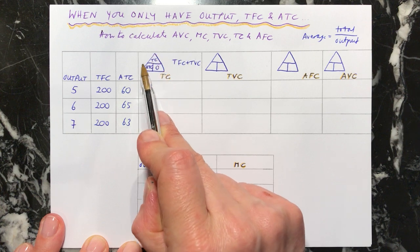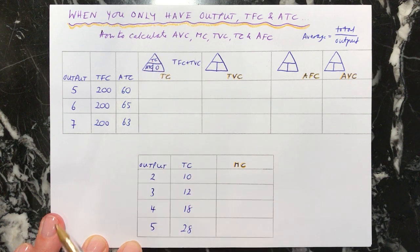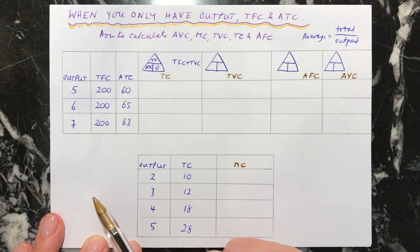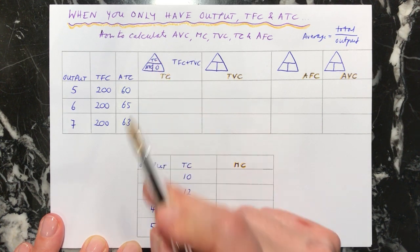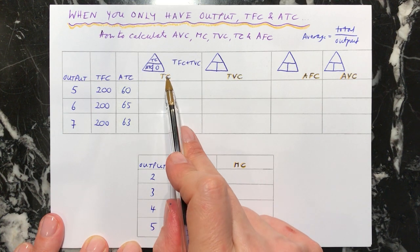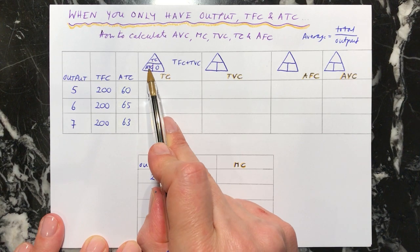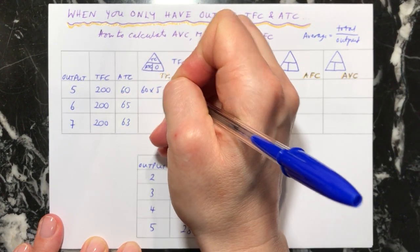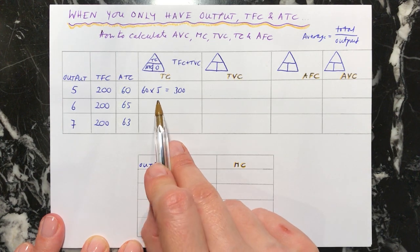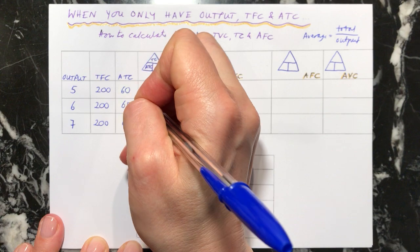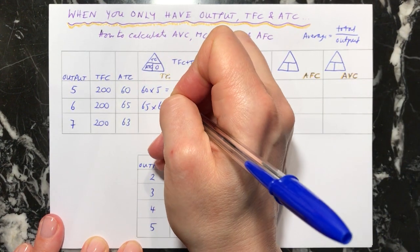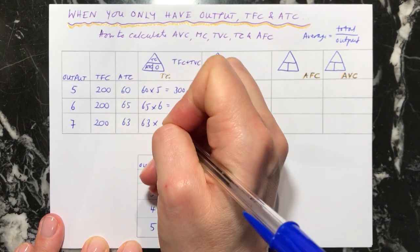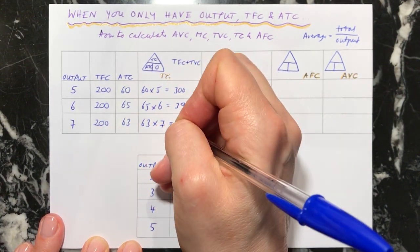We can use a triangle formula where this times this equals the one at the top: average total cost equals total cost divided by output, and output equals total cost divided by average total cost. So we can find total cost by doing average total cost multiplied by output. For the first example: 60 × 5 = 300. For the next: 65 × 6 = 390. And the last one: 63 × 7 = 441.